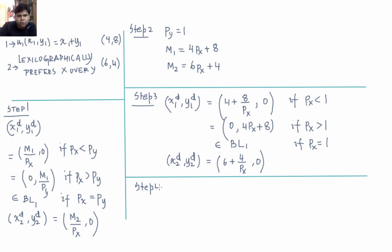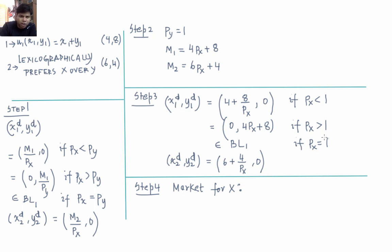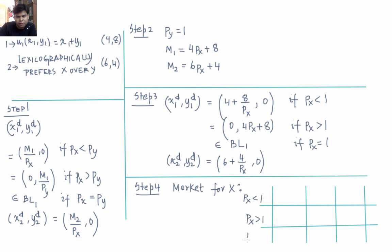Step 4 is to pick one market and solve for the equilibrium price of x by equating demand and supply. We consider the market for x and search across three cases based on individual 1's demand function: Case 1 is px < 1, Case 2 is px > 1, and Case 3 is px = 1.